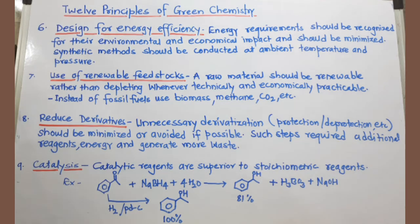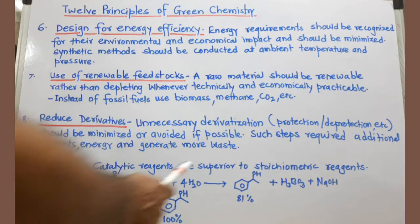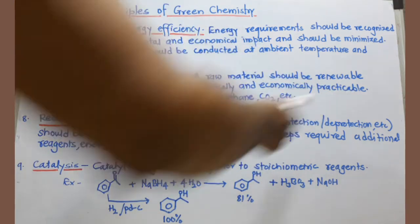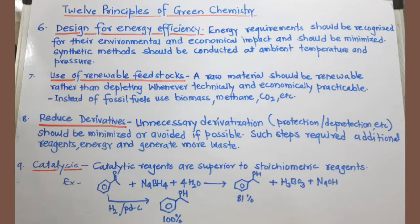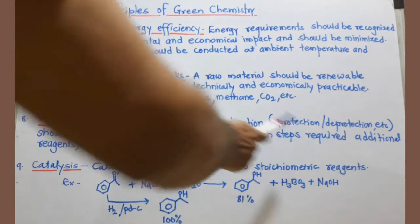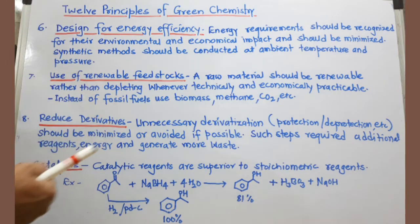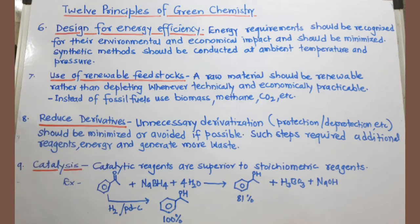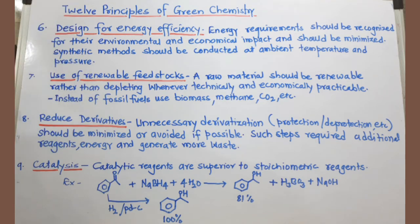The eighth principle is to reduce derivatization. For certain reactions, we need to protect functional groups, and in the final step we must de-protect them — this increases the number of steps. More steps mean more reagents, more energy, and more waste generated, which is not good for the environment. So whenever possible, unnecessary derivatization should be avoided.